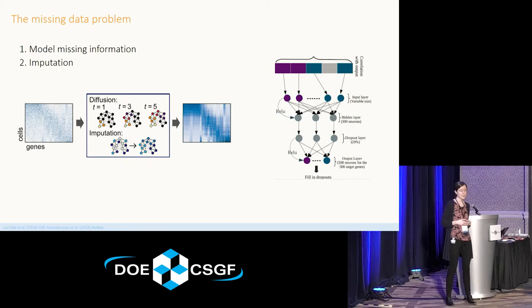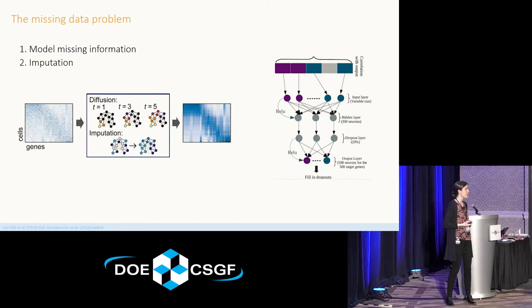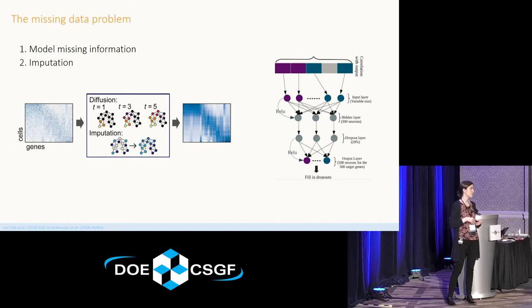People have proposed a variety of different methods to deal with this dropout problem. Sometimes people include extra zeros in the model itself. Others are exploring imputation-based methods, which tend to work better when you have a lot of cells, using information sharing between similar cells to fill in the gaps for what's missing — and this seems to work fairly well. People are also exploring more complex neural network type methods for this as well.